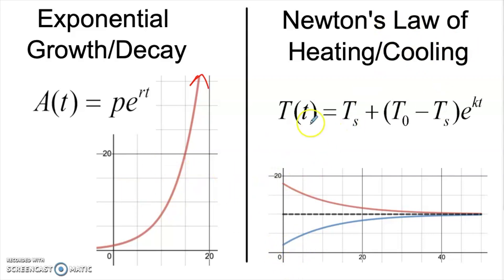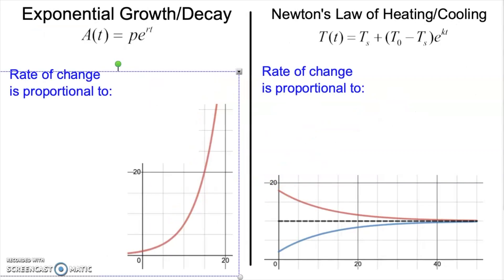Now to understand the difference between these two models, it helps to have a sense of where they come from. When we're talking about exponential growth and decay, this actually comes from a rate of change that is proportional to the amount present. This works perfectly for something like money, because the more money you have, the faster your money is going to grow, because it's growing proportional to how much is there.